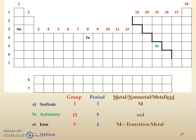Helium is the last one. Find him over here — he is group 18, and he is in the very first row going across, so that is period 1. He's to the right of the stair step line, so he is a non-metal.